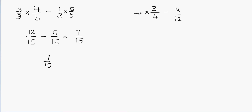I can multiply my denominator by 3 to make it 12, since 3 times 4 is 12. And since I multiplied 3 into the denominator, I have to multiply 3 into the numerator as well. Now you can see that the denominator is 12 on both sides. Instead of multiplying both fractions, I just multiplied one — making the calculation easier. So 3 times 3 is 9, and 3 times 4 is 12, giving us 9 over 12. And we have 8 over 12.